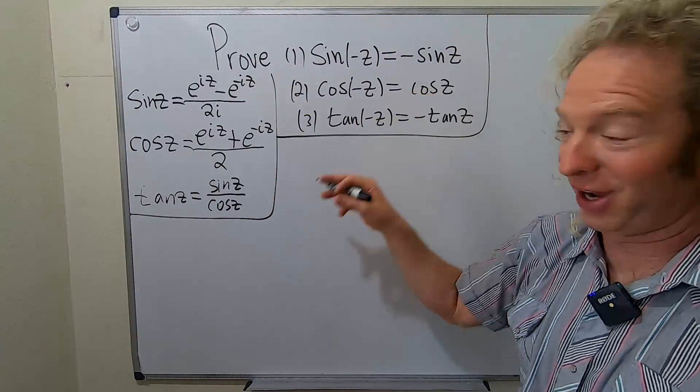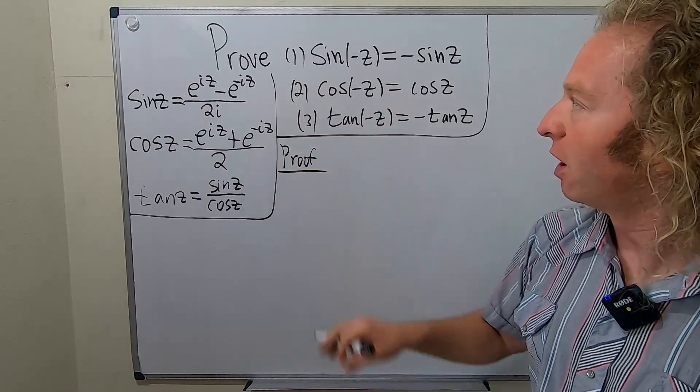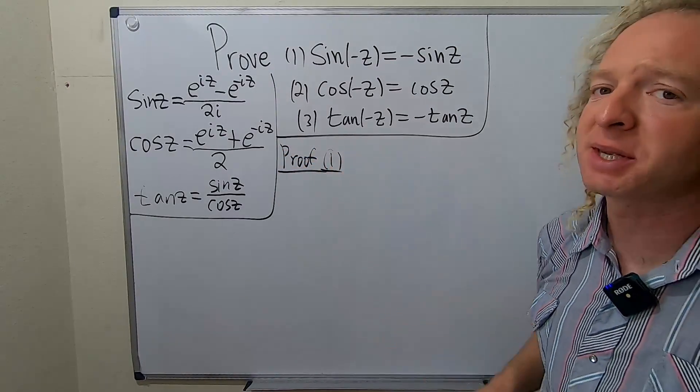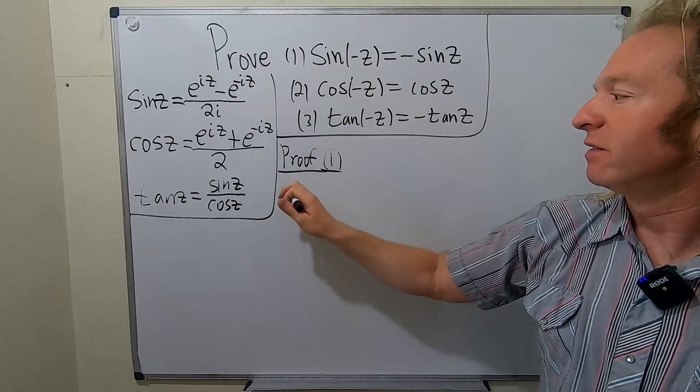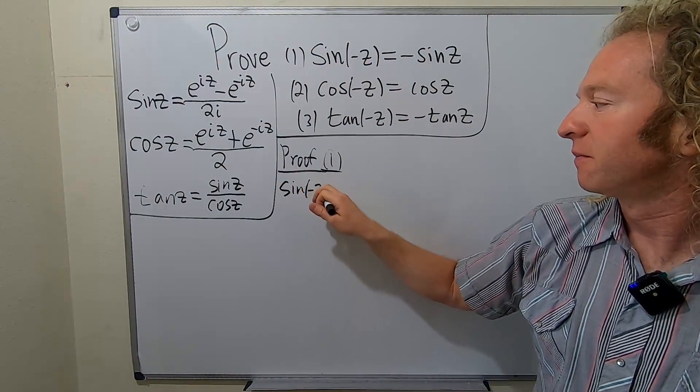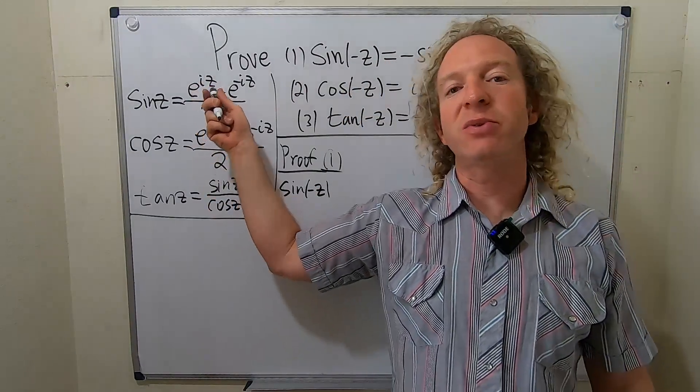Let's try it. So proof of 1. Sine of negative z. Basically that means I'm going to write this down and show it's equal to this. We replace all the z's with negative z's.